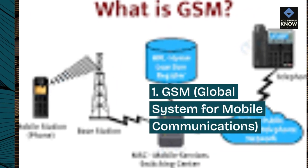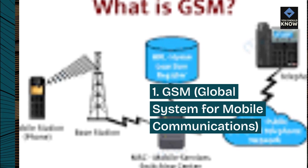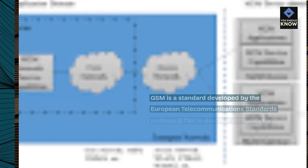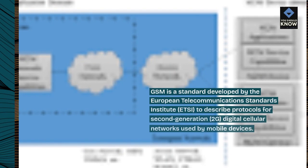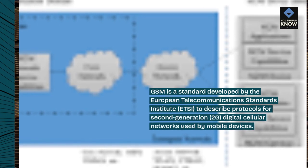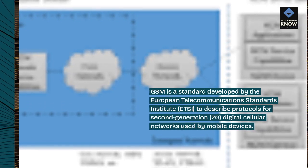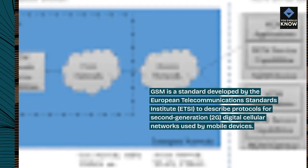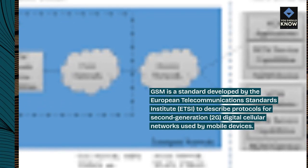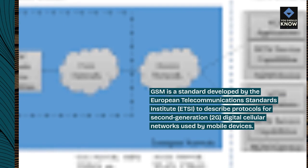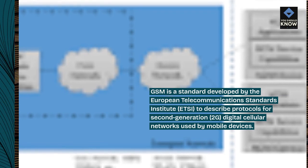1. GSM, Global System for Mobile Communications. GSM is a standard developed by the European Telecommunications Standards Institute (ETSI) to describe protocols for second-generation (2G) digital cellular networks used by mobile devices.